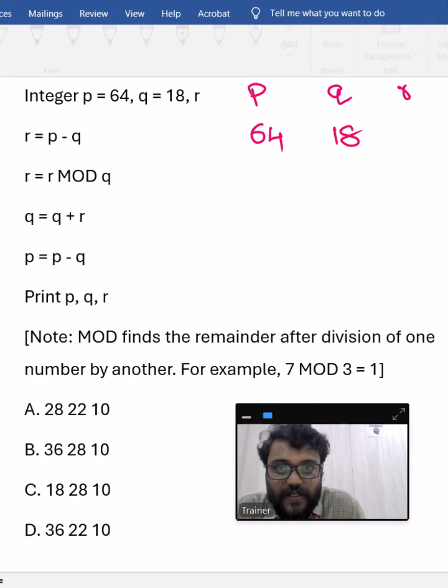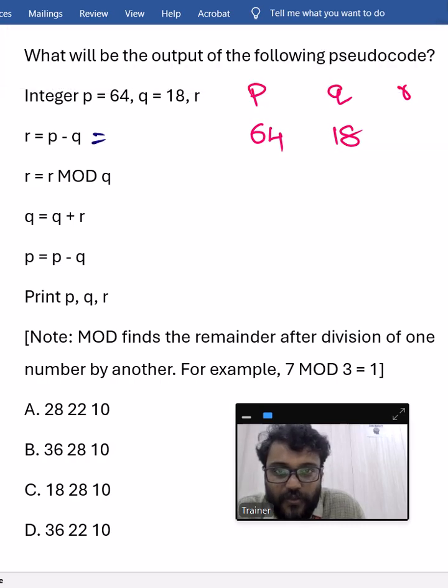If you check the first step here, r equal to p minus q means 64 minus 18, right? So what will be the r value? 48? No, it is 46, right?